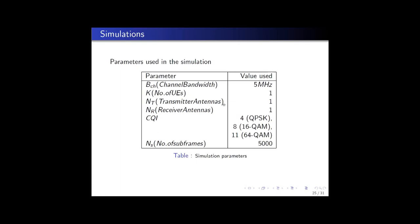We will have a look at the parameters and the values that were used in the simulation. The LTE channel bandwidth was fixed at 5 megahertz, which is one of the several options available.